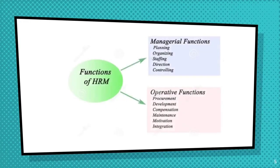Now we discuss the functions of HRM. The functions are divided into two categories: managerial functions and operative functions. In managerial functions, planning involves determining the number and type of employees needed to accomplish organizational goals. Organizing means tasks are allocated among members, relationships are identified, and activities integrated towards a common objective.